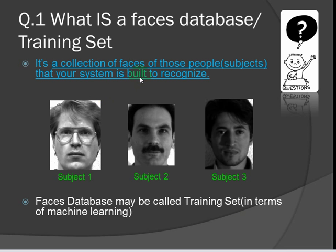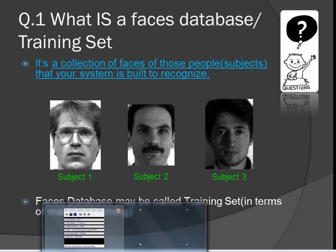Well, it's just a collection of faces of those people, also called subjects, that your system is built to recognize. For example, these are the three people and the three subjects for whom we want to make a face recognition system, which is supposed to recognize them whenever they come in front of the camera. Just remember, the faces database may also be called a training set in terms of machine learning.